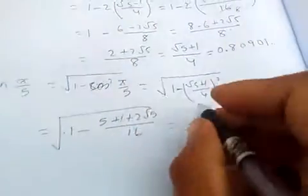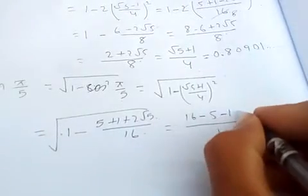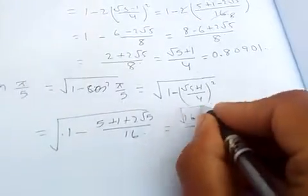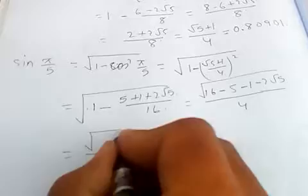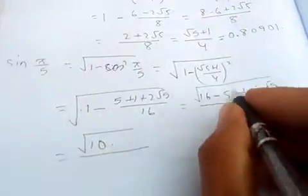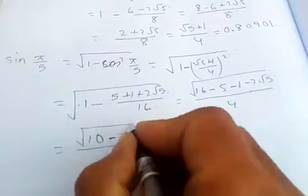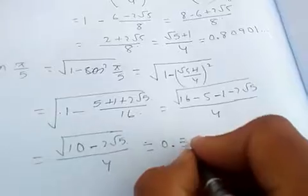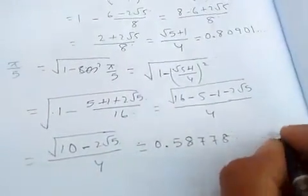And this 16 comes out, and so here is 16 minus, 1 minus 2√5 here is square root. So which is √(10 - 2√5)/4, and if you calculate this you'll get 0.58778 and so on.